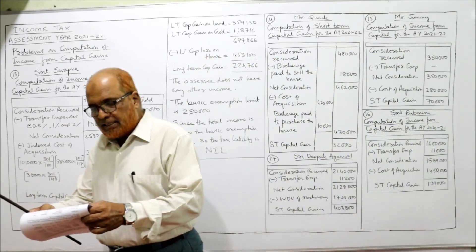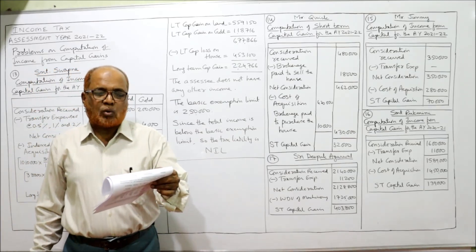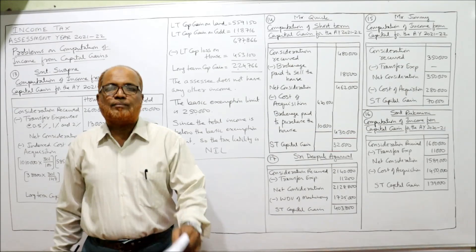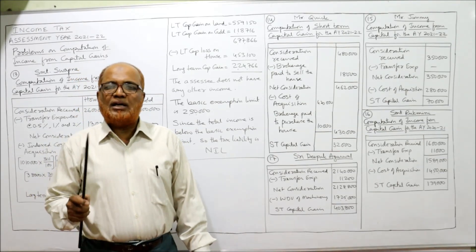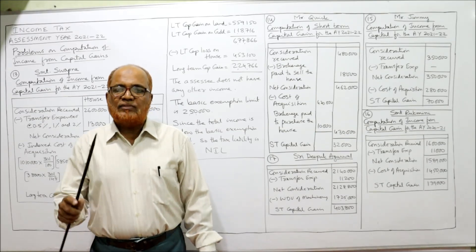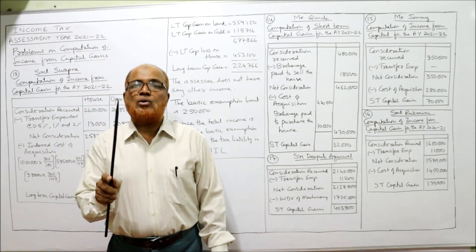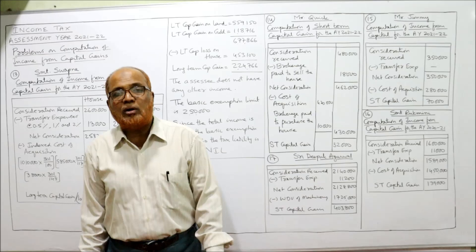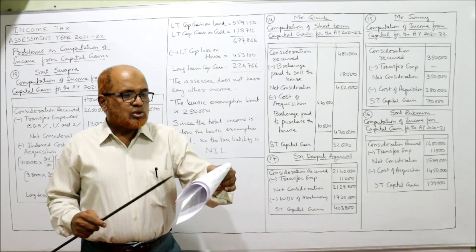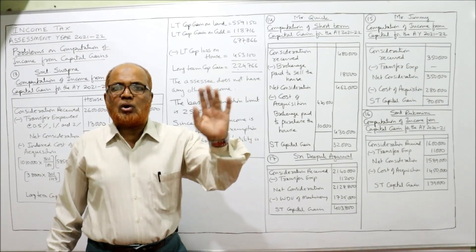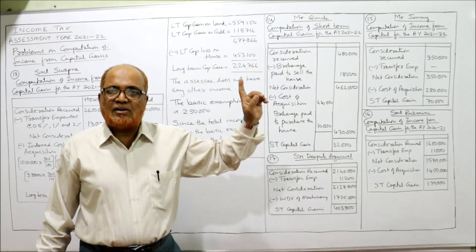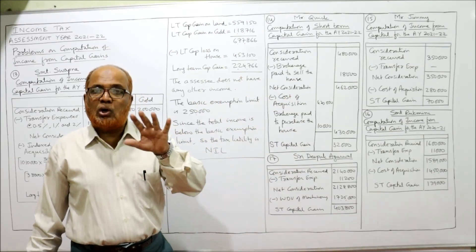Problem 14: During the previous year relevant to the current assessment year, Mr. Quick purchased a house for 4,20,000 and after 12 months sold the same for 4,80,000. Under the Income Tax Act, if a house property is sold within 2 years from purchase it's a short-term capital asset; if held for more than 2 years it's a long-term capital asset. Since Mr. Quick sold the house after only 12 months, it is a short-term capital asset and the gain arising is a short-term capital gain.